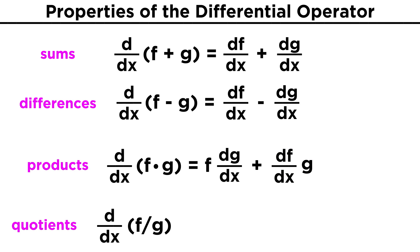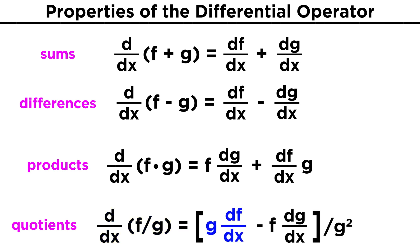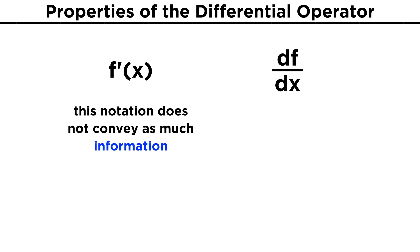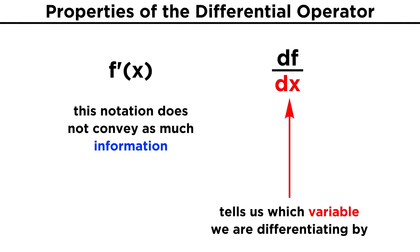And similarly, the quotient rule still applies, so d dx of f over g equals g df dx minus f dg dx, all over g squared. The reason we are reintroducing this notation now is because we will want to take more derivatives than just those that are with respect to the variable x, so we need some clear notation that indicates which variable we will be differentiating by.